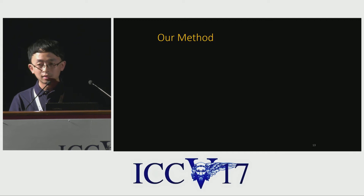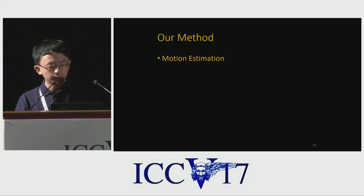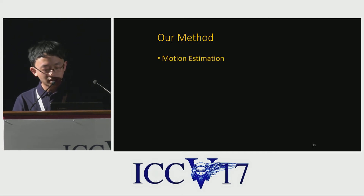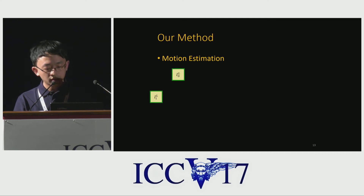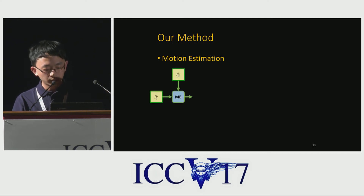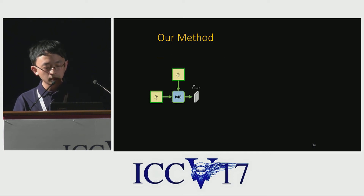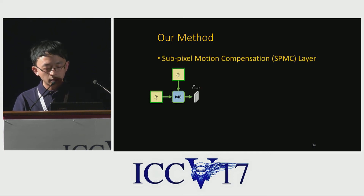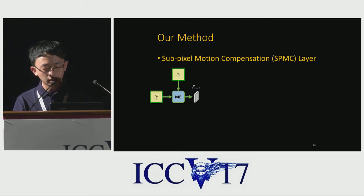Our method contains three components. The first module is a motion estimation network, which takes two low-resolution images as input and outputs a low-resolution motion field. The second module is newly designed — we call it the sub-pixel motion compensation layer, or SPMC layer.